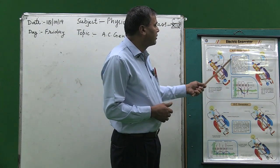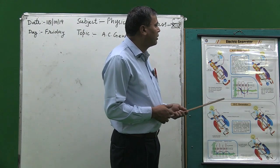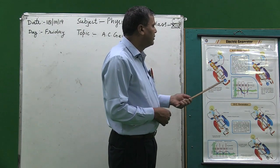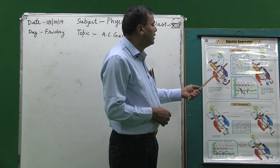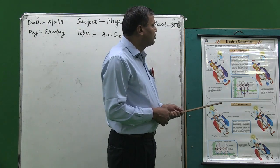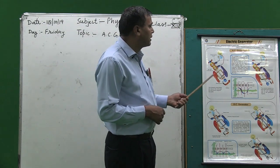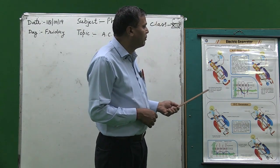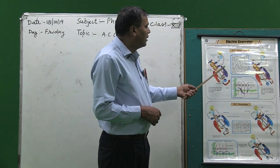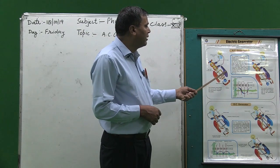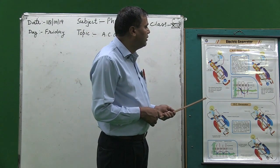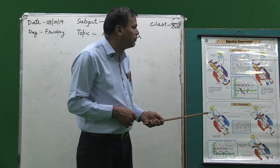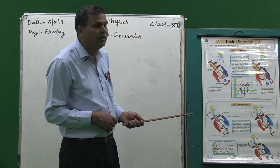The simplest AC generator consists of a rectangular coil rotating between the poles of a permanent magnet. The ends of the coil are joined to two slip rings on the axle, against which carbon brushes press. The rotating coil cuts the magnetic field lines and a voltage is induced in it. The induced current thus produced reverses every half turn due to the slip rings.